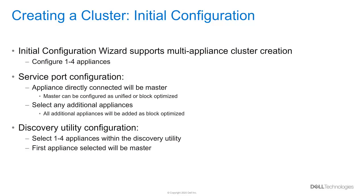No matter what the deployment mode of the master appliance is, if you are discovering the appliances using the discovery utility, you can select multiple appliances within the discovery utility itself. The first appliance you select will be designated as the master appliance, and any additional selected appliances will be included in the Initial Configuration Wizard. Once inside the wizard, you can still modify the selection of appliances again if you choose to do so.